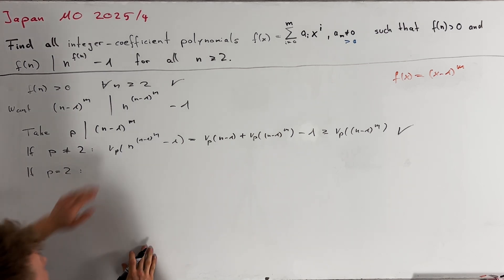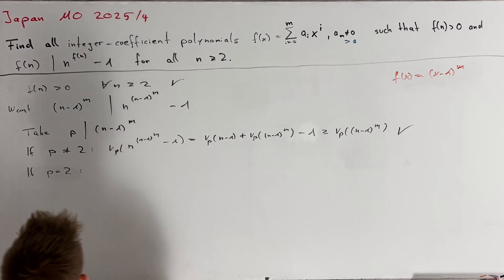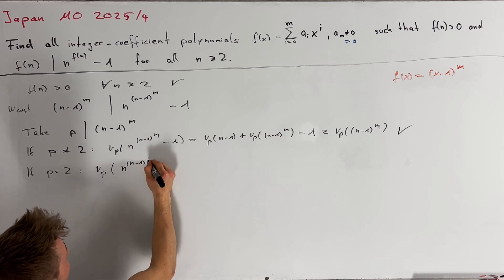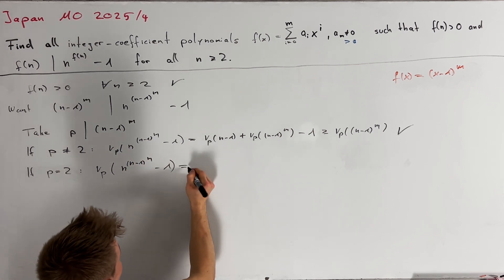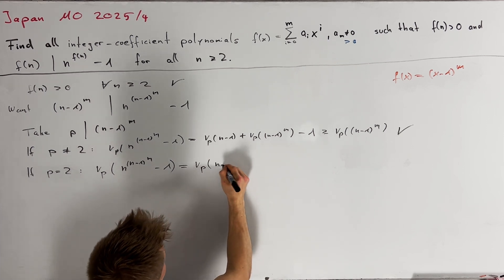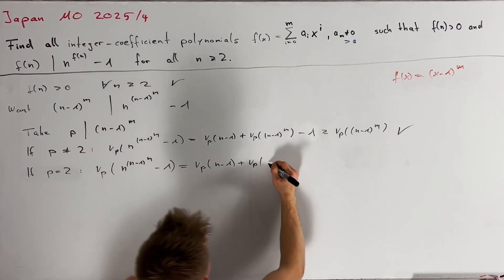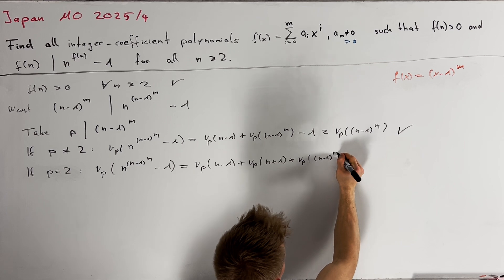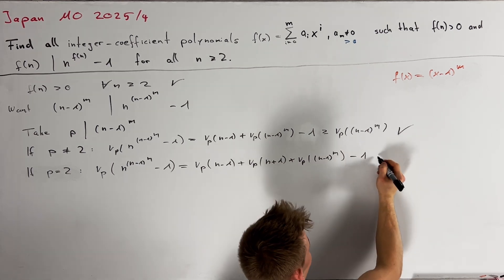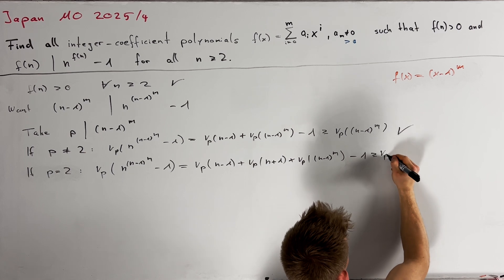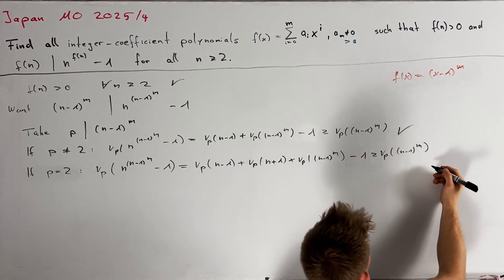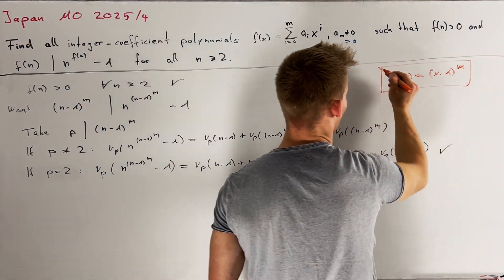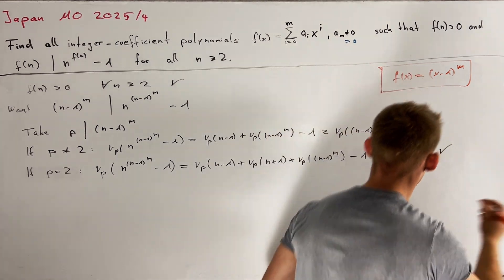For the case p equals 2, note that the exponent (n-1)^m is even. Therefore, the LTE lemma gives ν₂(n^((n-1)^m - 1)) equals ν₂(n-1) plus ν₂(n+1) plus ν₂((n-1)^m - 1). This is again greater than or equal to ν₂((n-1)^m), so this case is also good. In conclusion, all functions f(x) = (x-1)^m satisfy the given conditions, and therefore we are done.